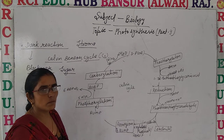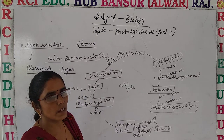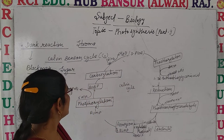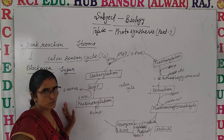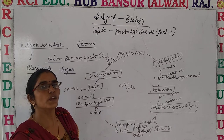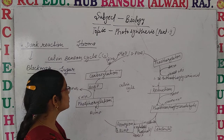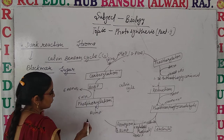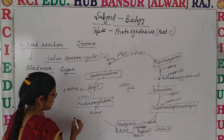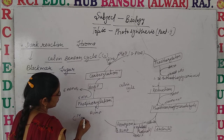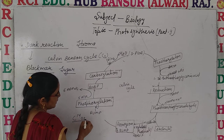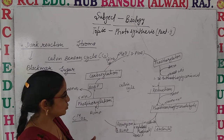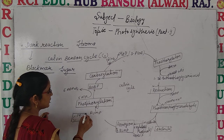The C3 cycle was given by Calvin and co-workers, and they received a Nobel Prize for it. To prove it, they used isotopic CO2 — specifically C14O2, which is isotopic carbon — to trace the pathway of carbon fixation.